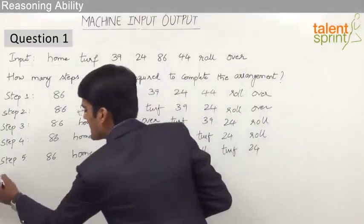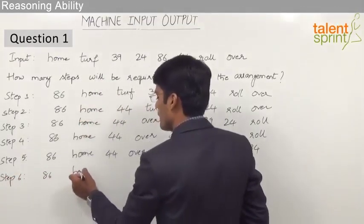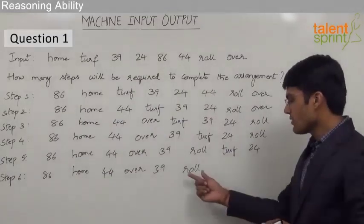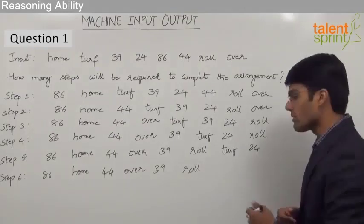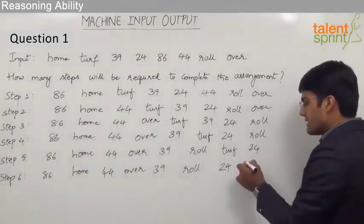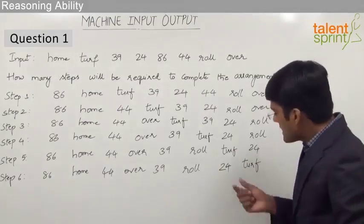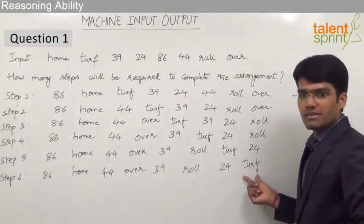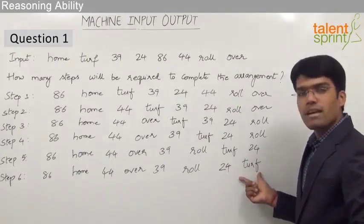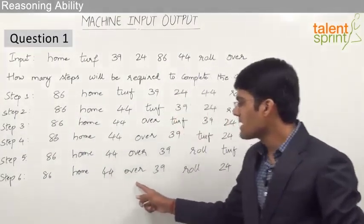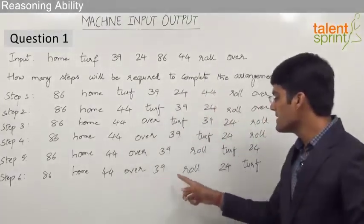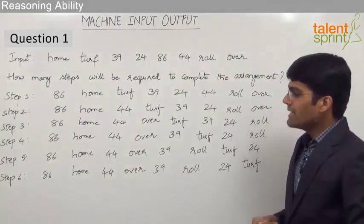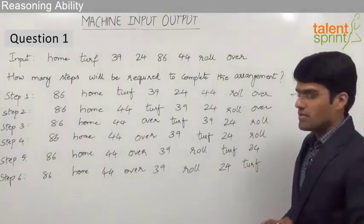Step 6: With 86, home, 44, over, 39, and roll at their correct places, the next number must be 24 as it is the only number remaining. 24 goes to position 7 and turf takes position 8. Since after 24 we need a word and turf is the only word left, turf is already in the correct place. The rearrangement is complete — numbers and words are in alternate positions, numbers in decreasing order, words in alphabetical order. Total 6 steps are required.